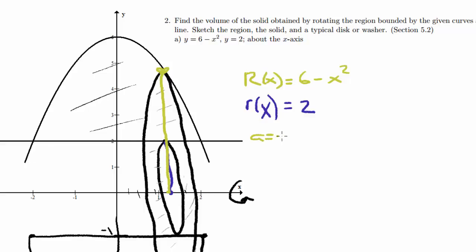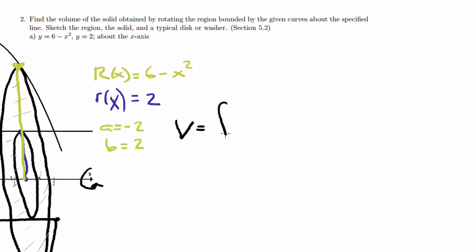I need to do the endpoints, so it starts at negative 2 and it ends at positive 2. I'm going to mark the formula as volume is integral from a to b, which is pi, big R of x squared, minus pi, little r of x squared.